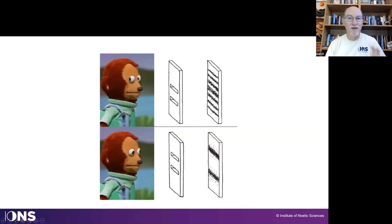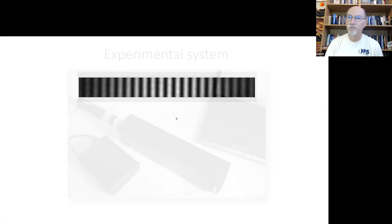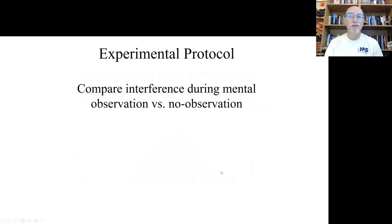And in this case, for our experiment, it's purely mental observation. You're not looking at anything, only with your mind's eye. That's what the system looks like. This is the interference pattern you would get, and if you plot the intensity, it looks like this.